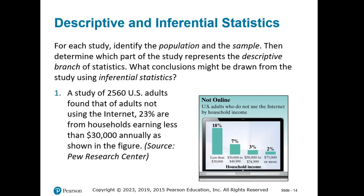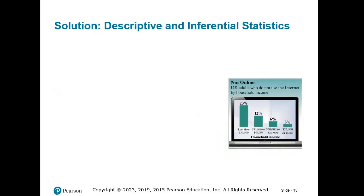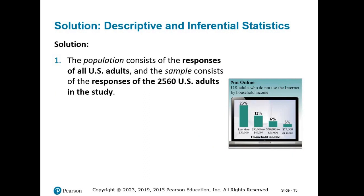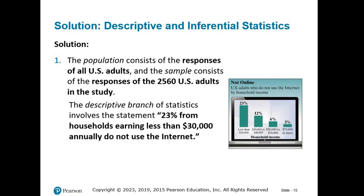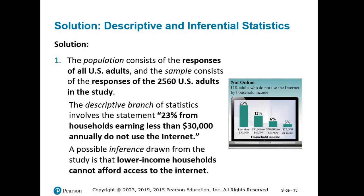Study number one: a study of 2,560 U.S. adults found that of adults not using the internet, 23% are from households earning less than $30,000 annually. The population consists of the responses of all U.S. adults. The sample consists of the responses of the 2,560 U.S. adults in the study. The descriptive branch of statistics involves the statement that 23% from households earning less than $30,000 annually do not use the internet. A possible inference drawn from the study is that lower income households cannot afford access to the internet.